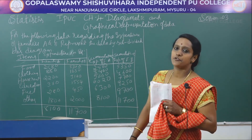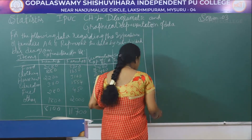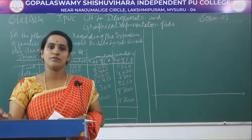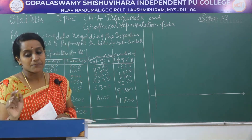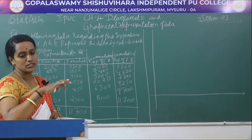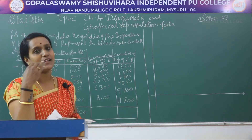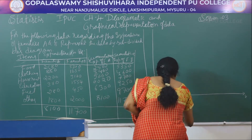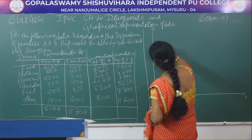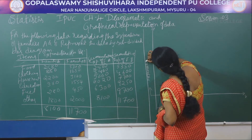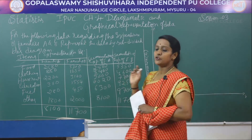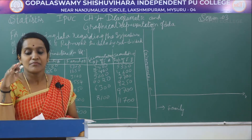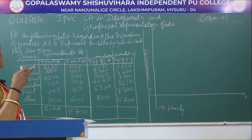Now the next step is we have to draw the diagrams using our graph. I am showing this in a simple way — if you plot this on your graph sheet you will get a clear picture. I am having two families, and the values are in thousands. In the x-axis I will take the families, and in the y-axis I will take the expenditure in rupees.